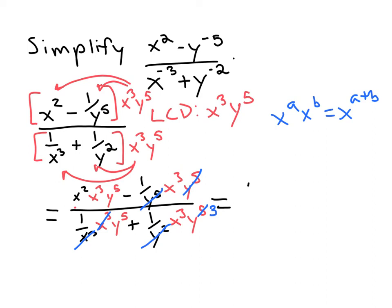So x squared times x cubed gives us x to the two plus three, which is x to the fifth times y to the fifth. Then minus - everything canceled in the second part of the numerator except x cubed.